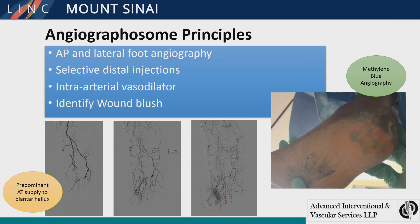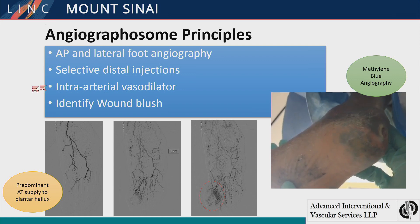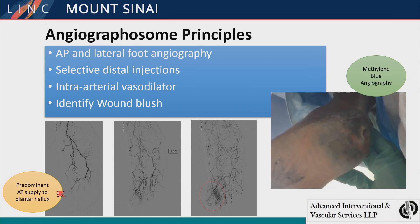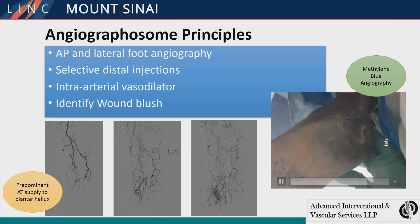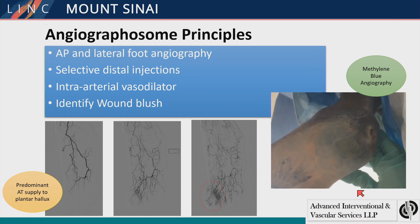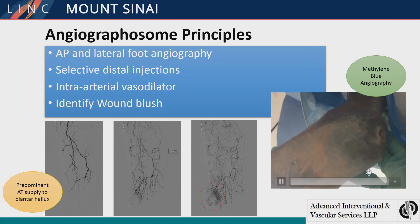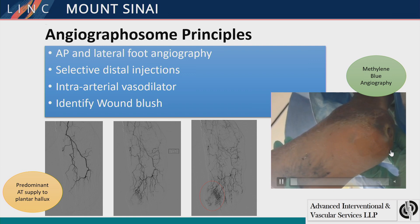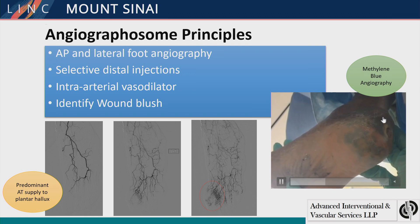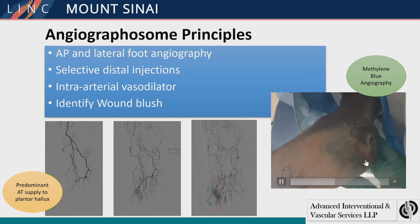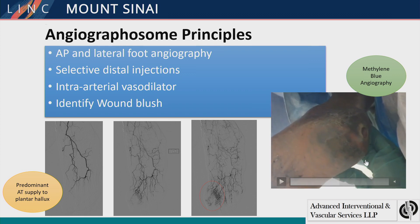Obviously you need multiple views to do this: selective distal injections, intraarterial vasodilator, and you're looking for the wound to blush. Here's a case — a patient who has a predominant anterior tibial artery supply to a plantar hallux wound. When we're down there and unsure, we'll do methylene blue angiography — some of you have seen this, or in Japan it's indocyanin green — where we do selective distal injections of one to two cc's of methylene blue, diluted with a little lidocaine because otherwise it's uncomfortable, and we can confirm we're in the proper vessel to perfuse the wound.